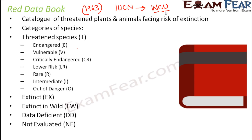There are various categories of species. Under threatened species, there are subcategories like endangered, vulnerable, critically endangered, low risk, rare, intermediate, and out of danger. There are also categories for extinct species, extinct in the wild, data deficient, and not evaluated. These are abbreviated as T for threatened, EX for extinct, EW for extinct in the wild, DD for data deficient, and NE for not evaluated — each species has a category attached to it.